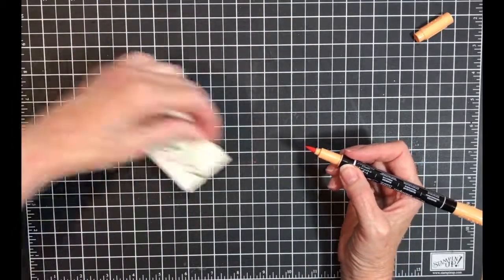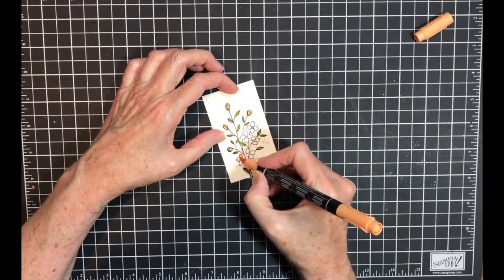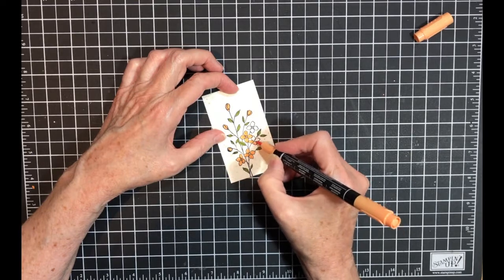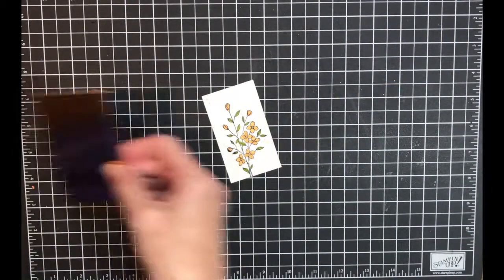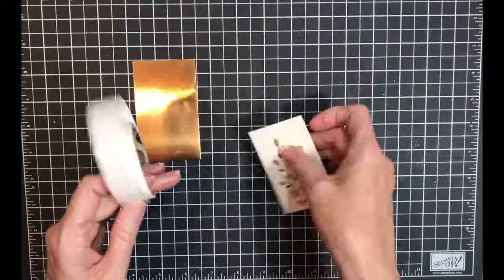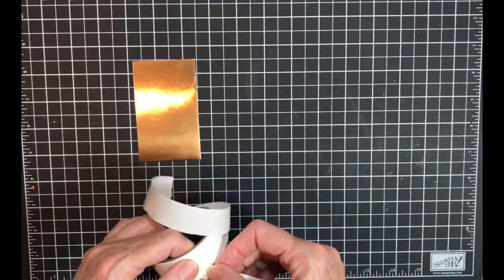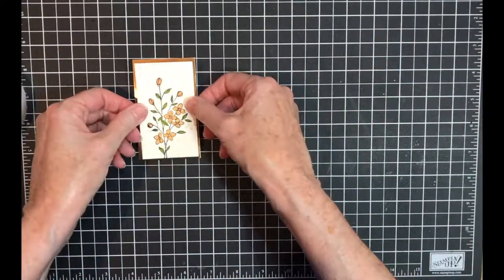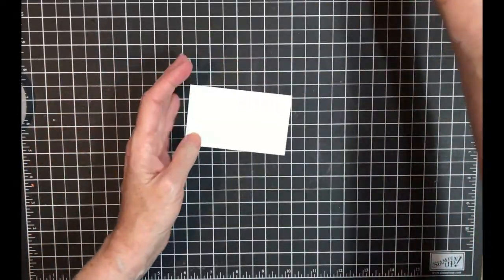And finally to my card. We're moving right along. I'm gonna use glue dots and I'm gonna attach this to my copper foil paper. I'm just putting one in each corner, and I'm going to put that down here.